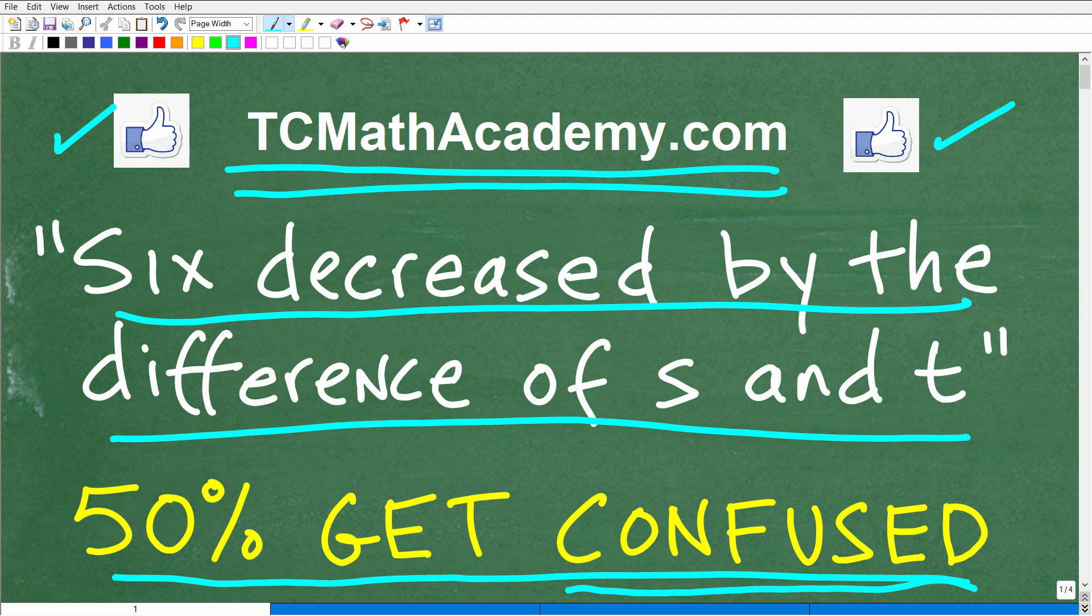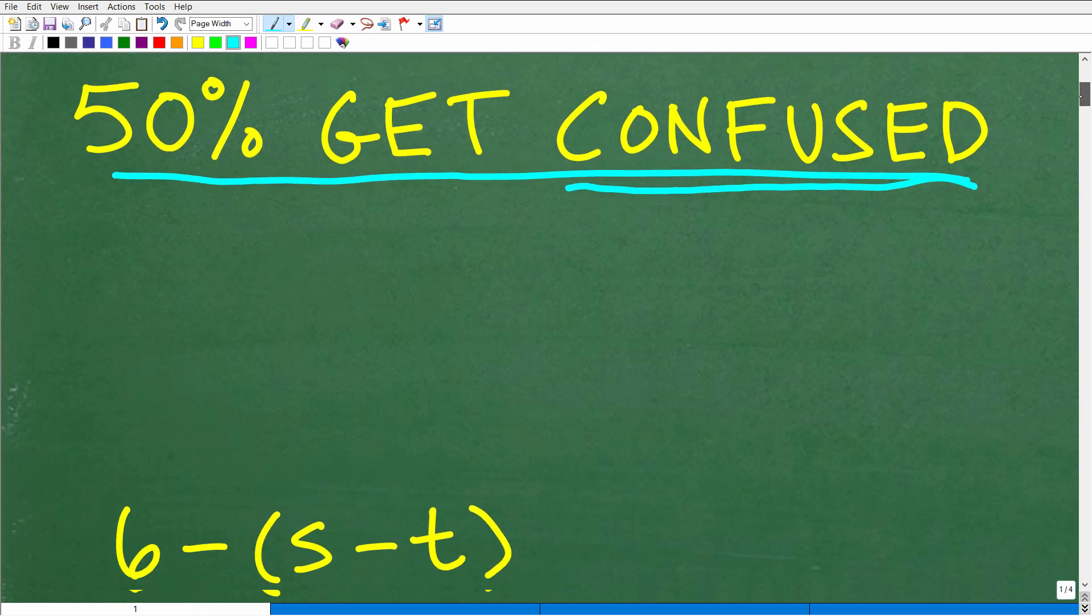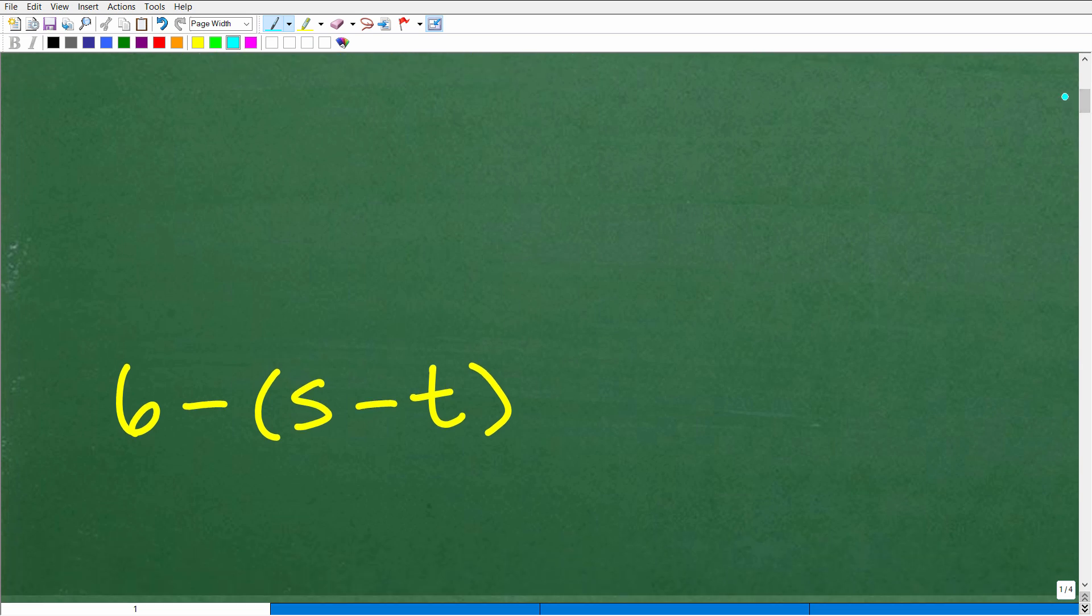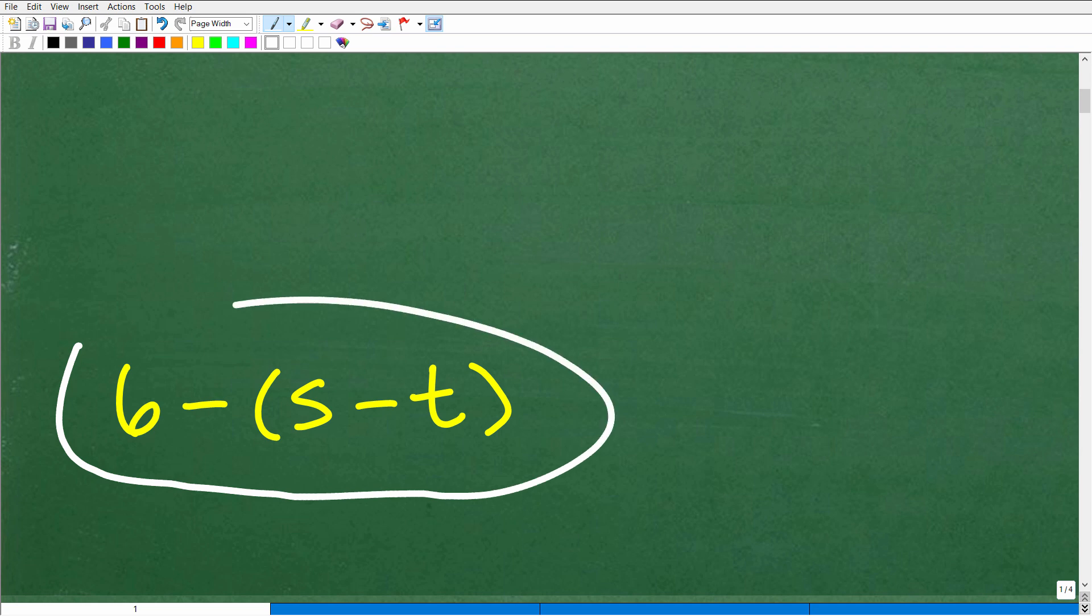Okay, so let's take a look at the answer here. Again, six decreased by the difference of S and T is equal to what in terms of a variable expression? Well, the answer is the following. So specifically, the answer is six minus parentheses S minus T. So this is the right answer.